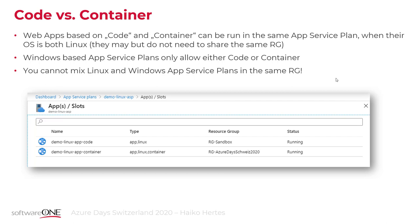For Linux-based web apps, code and container versions can run together in the same App Service Plan. For Windows, this is not possible - if you want to run code-based and container-based Windows App Services, you need two separate App Service Plans, and they can't exist in the same resource group on top of that. So the easy way is to go with Linux. Linux has a lot of stuff still in preview - you get no SLAs, but cheaper pricing. For production workloads, you currently need Windows if you need an SLA.